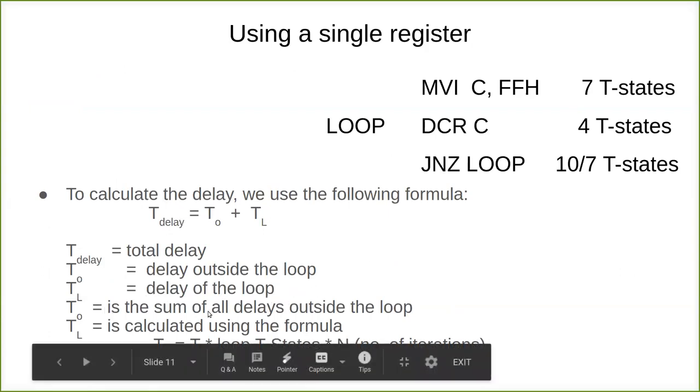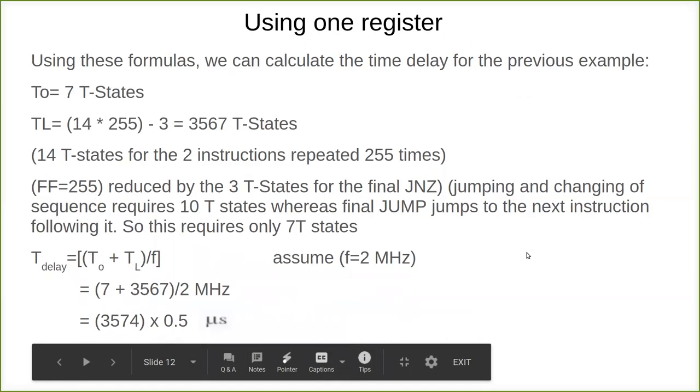T0 is the sum of all delays outside the loop. T0 is calculated using the formula. TL is the loop T-states times N. N is the number, which has to be converted to decimal. Here we have given hexadecimal, so we convert it into decimal.